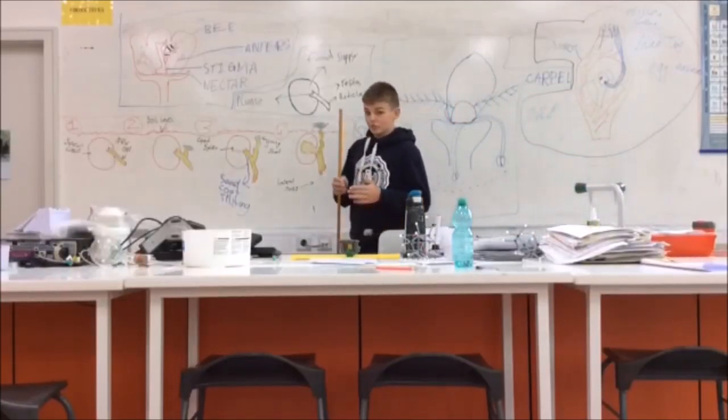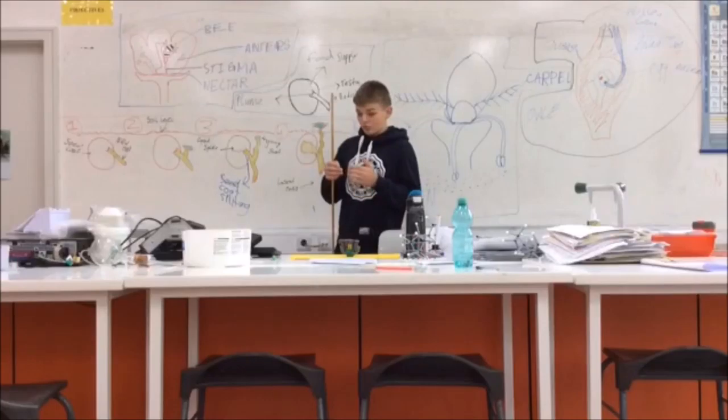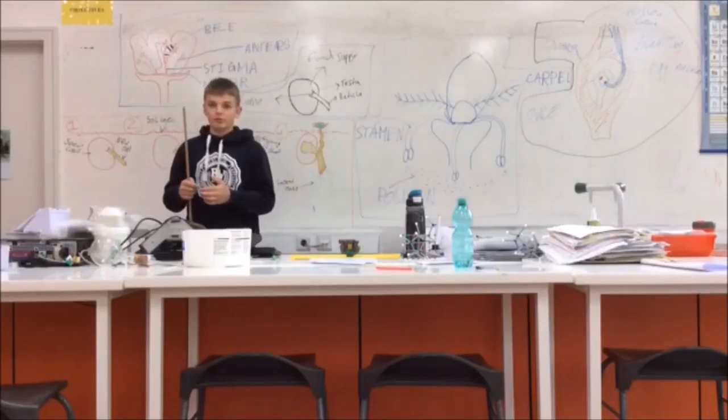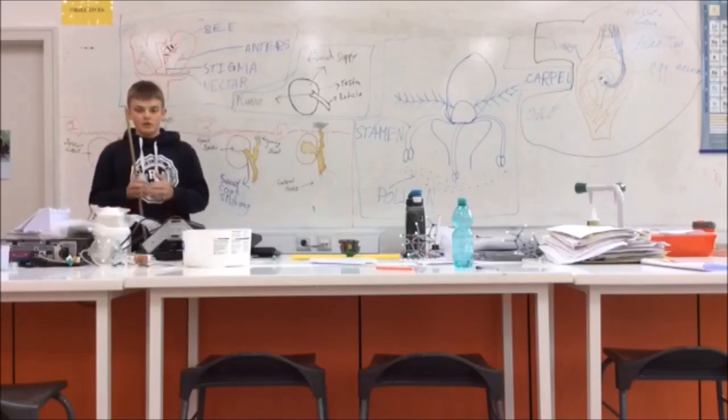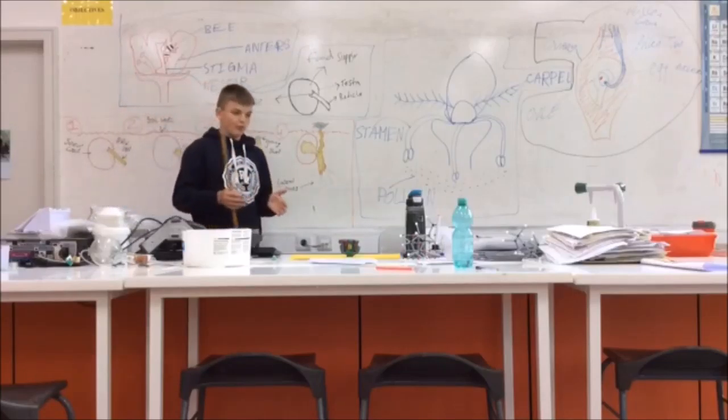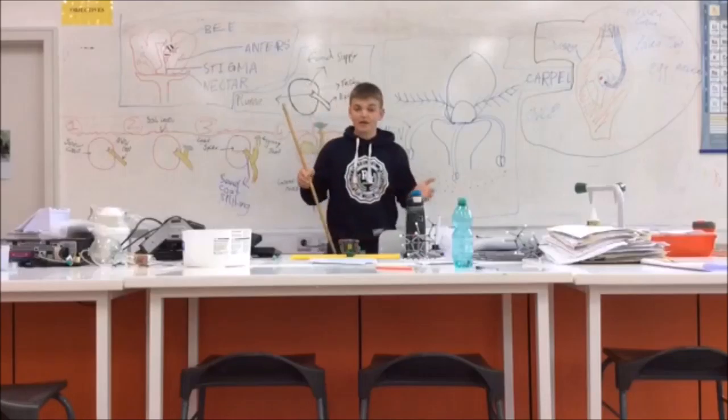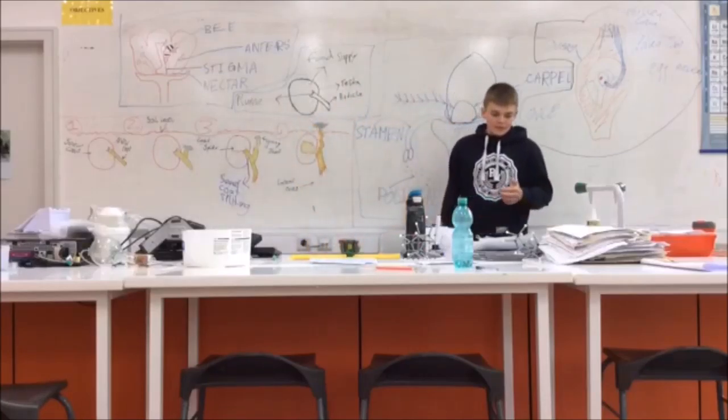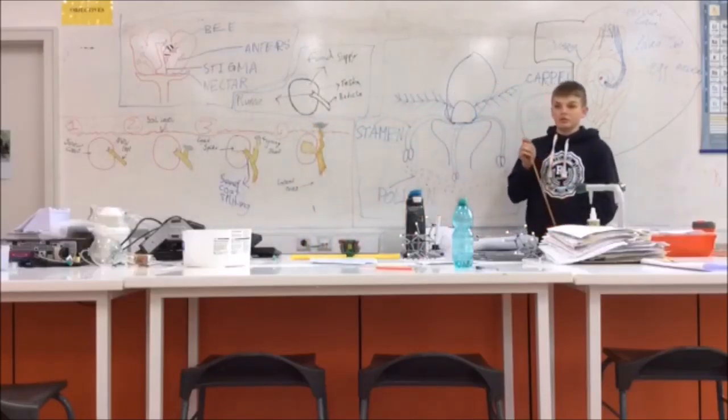Next I'm going to be talking about seed and fruit dispersal. This is how seeds and fruit get from where their parent plant is to other grounds to stop them competing with their parents for food, for resources, and for just area really, space.